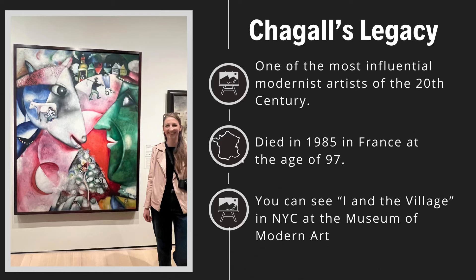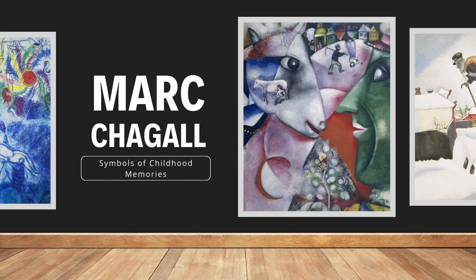To wrap up Chagall's importance in art history: he is one of the most influential modernist artists of the 20th century. He died in 1985 at 97 years old, and he ultimately lived in France up until that time. You can see I and the Village in New York City at the Museum of Modern Art, also known as MoMA. He is so influential because he paved a way, blending the surreal and realist realms of painting together, and he pulled from his childhood — he was telling his own story, which was not always how art was done. I hope you learned something new about Chagall, and I hope that you truly make a mark in the world through this artwork, telling your personal story of childhood memories.